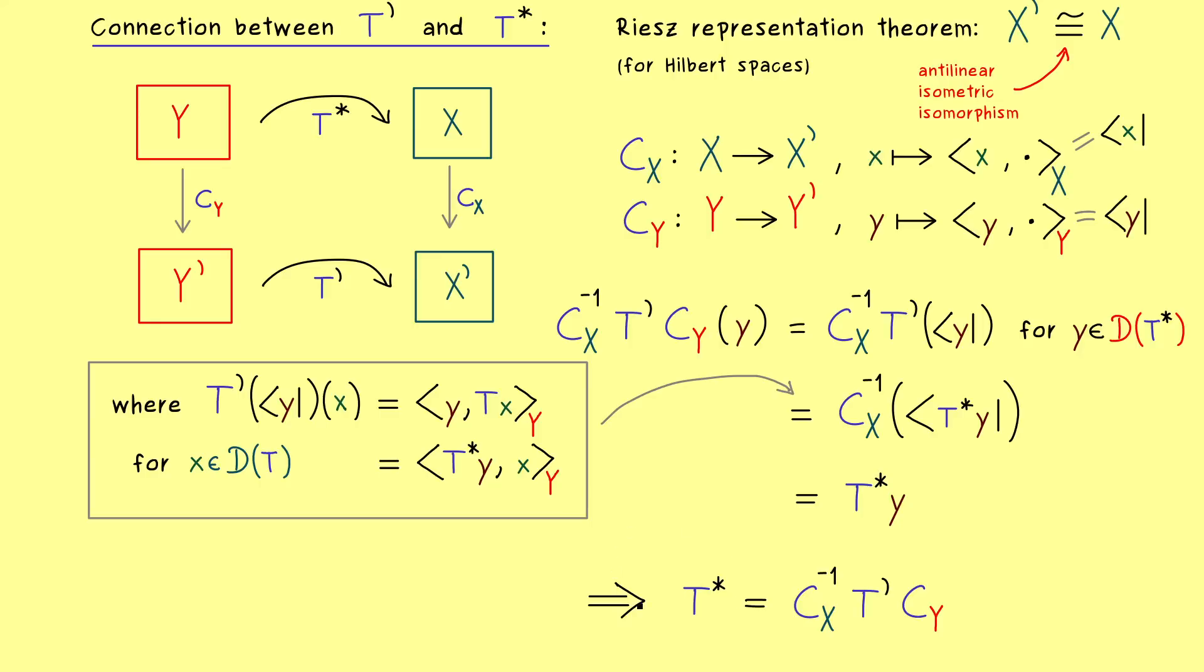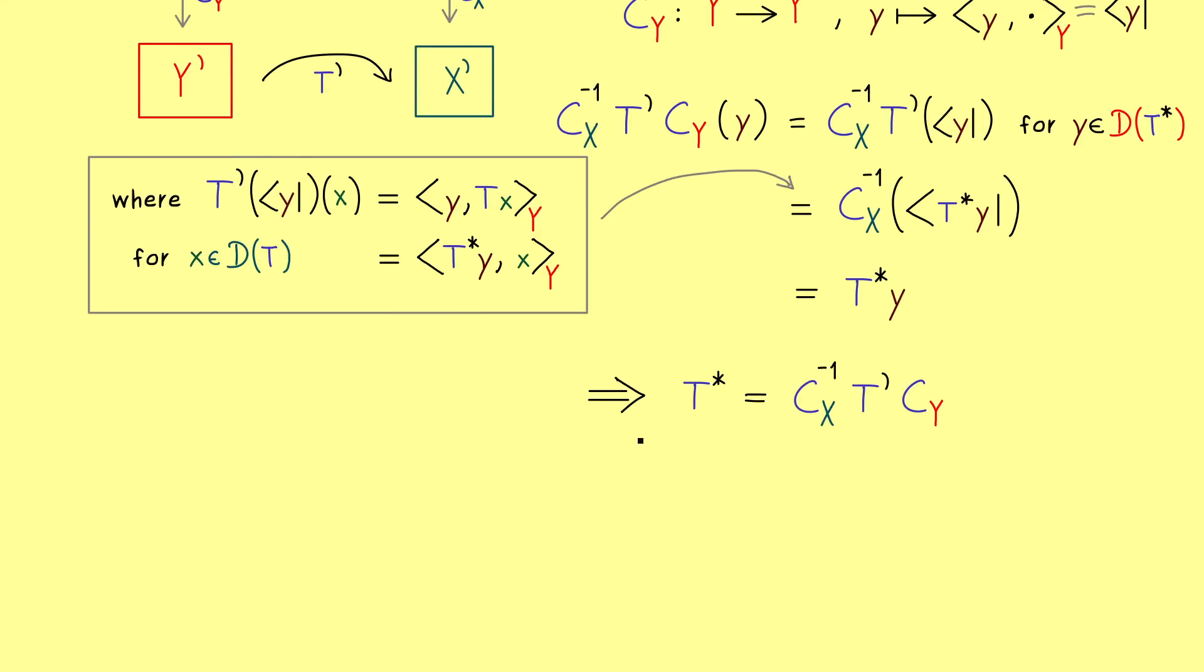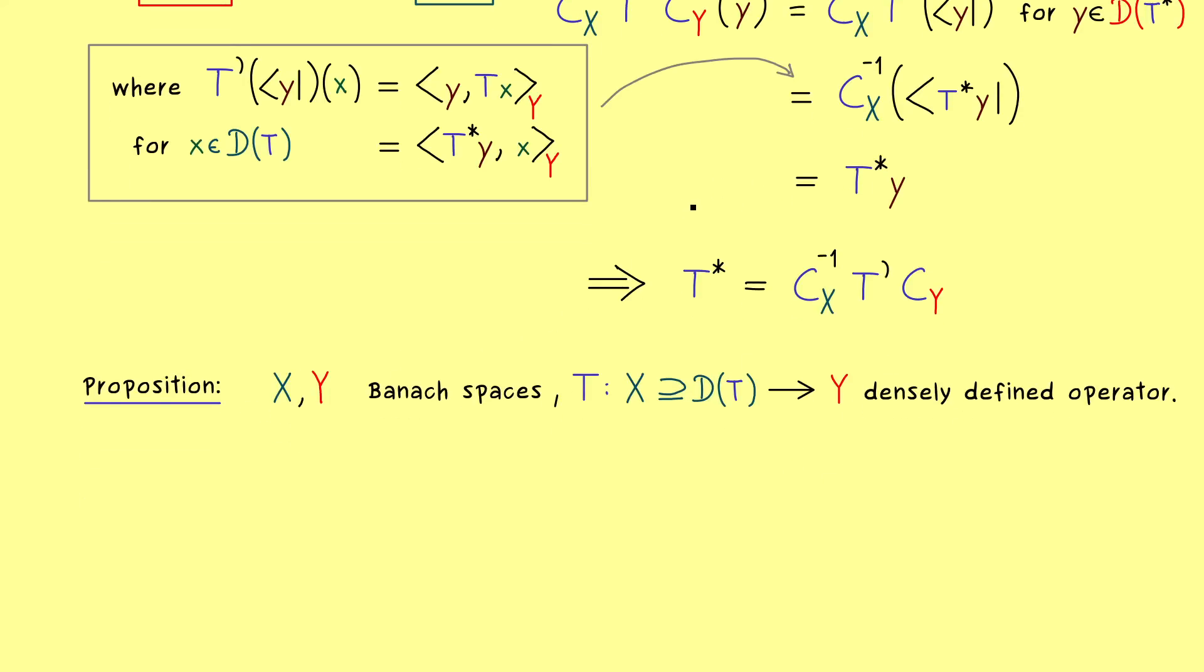So exactly what the picture suggested before, and we also recognize that the domains fit in as well. Okay, so this is the important operator equation you should remember when you want to translate between both adjoints. This is important because sometimes you might see a result written for the Banach space adjoint, but you actually need it for the Hilbert space adjoint. And now you know this is not a big problem at all, because you can just do the translation as we did it here.